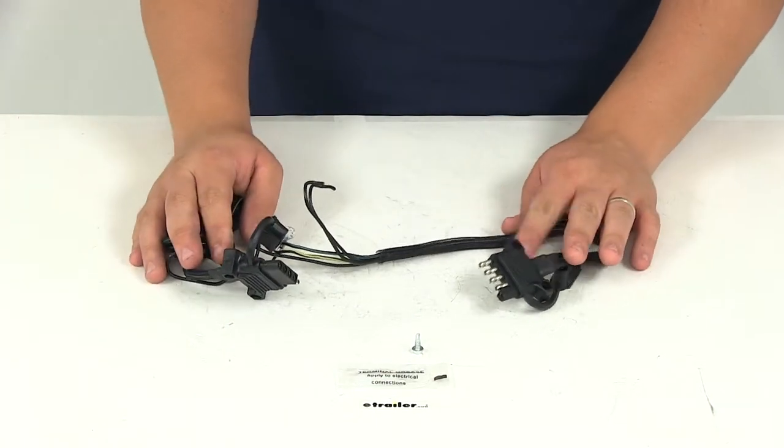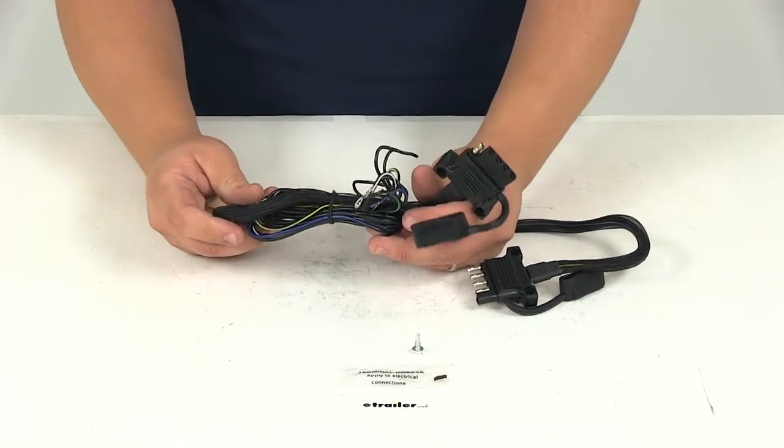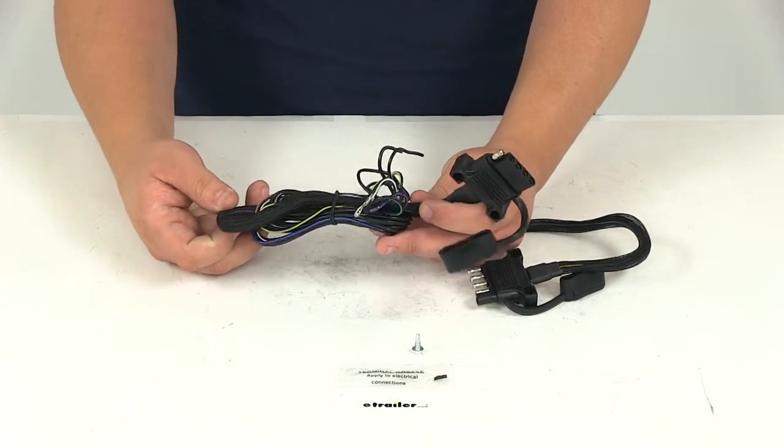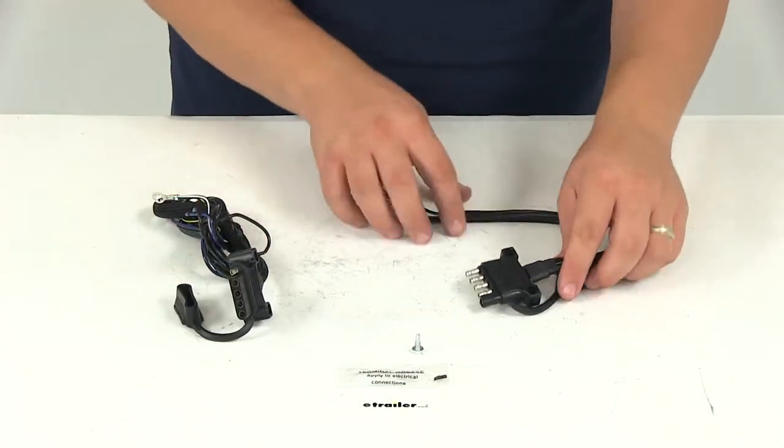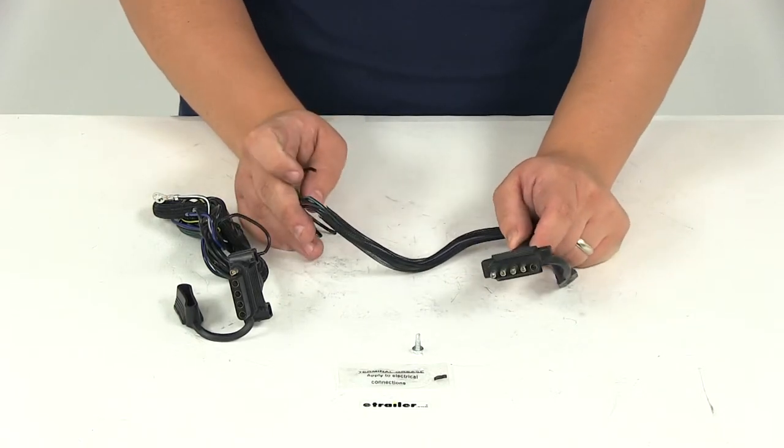This is a five-way flat connector. This side is for the vehicle end and measures 48 inches in total length. The trailer end wire is 18 inches in total length.